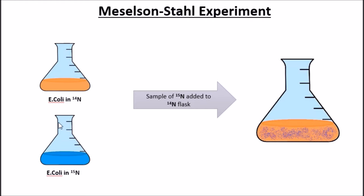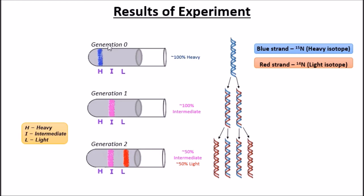A sample of E. coli with N15 was added to the N14 flask and the first sample, generation 0, was centrifuged. Samples were then taken every 20 minutes and the following results were obtained.